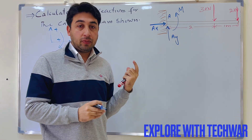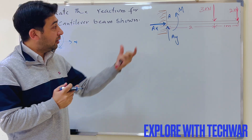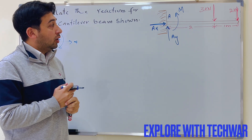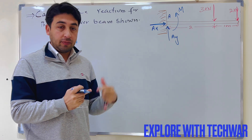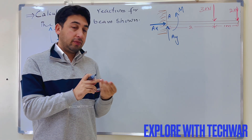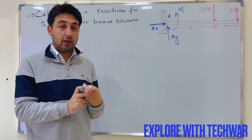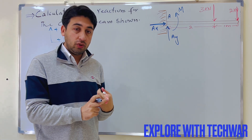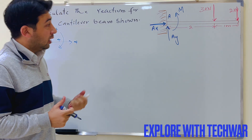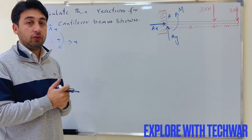We have to consider that this beam is at equilibrium, otherwise we will not be able to find the reactions. If the beam is at equilibrium, we can use three conditions of equilibrium: sum of forces in the X direction equals zero, sum of forces in the Y direction equals zero, and sum of moments about any point equals zero.